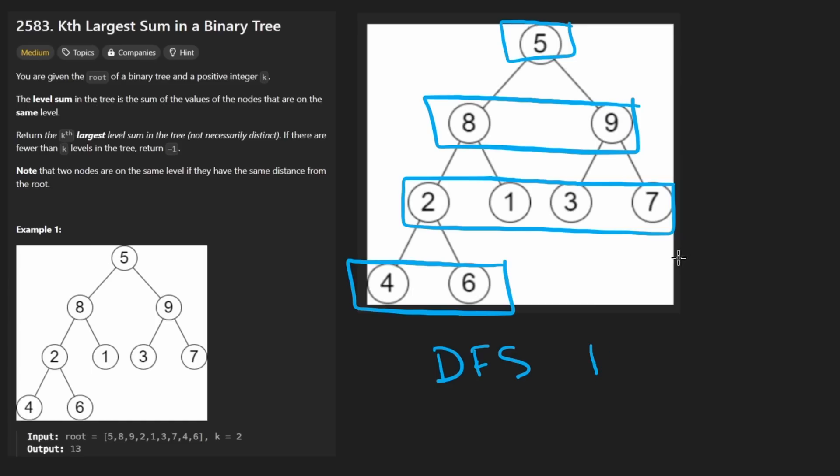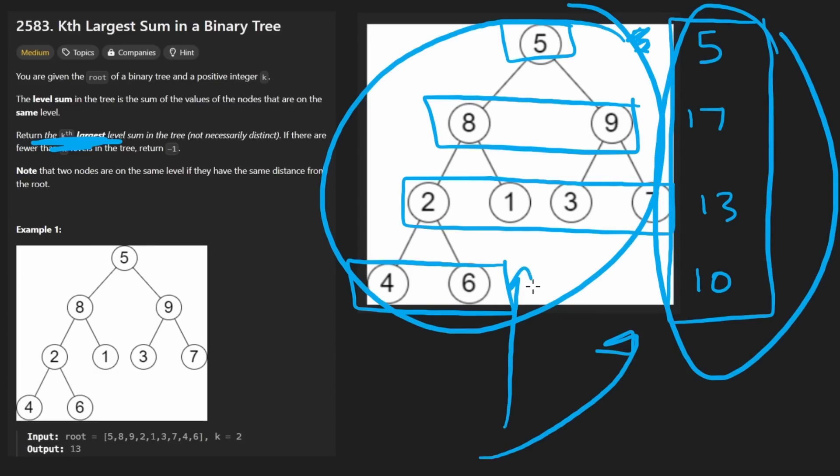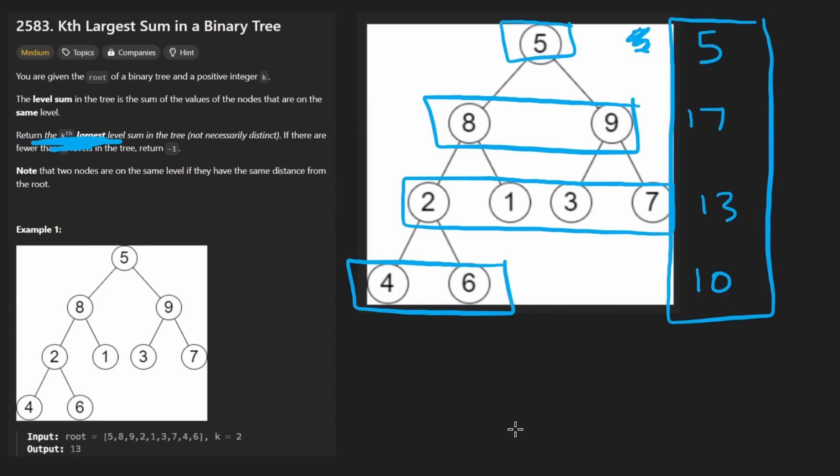So knowing that, what do we want to do with those level sums? Assume we had them: we have 5 here, 17 here, 13 here, and 10 here. Well, among all of these, we want to find the kth largest element. So we pretty much removed the part that we needed a tree for. Now that we have these integers, it's just a matter of finding the kth largest element from this set of elements.